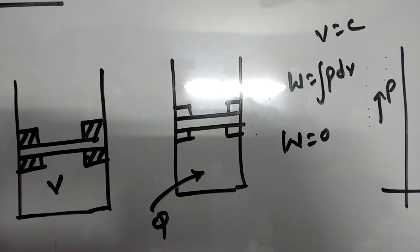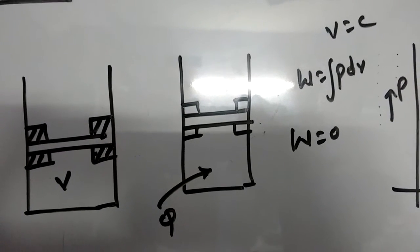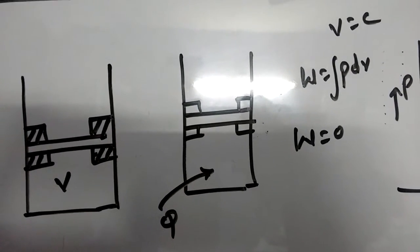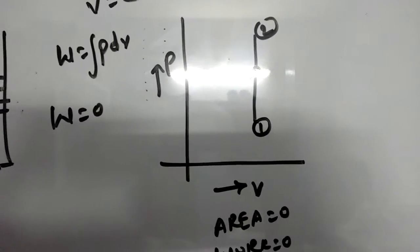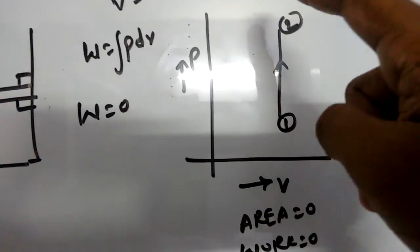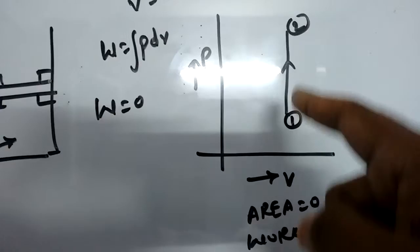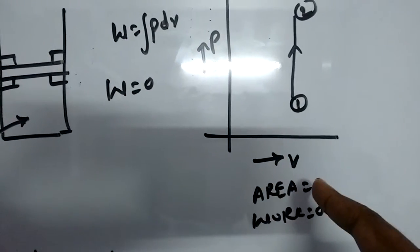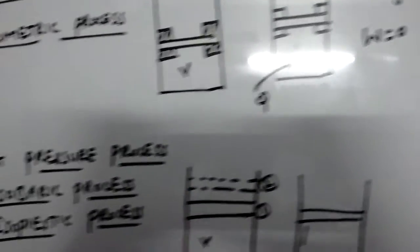From the graph of PV also you can conclude that the work done equals zero. Why? Because when you plot the process under PV, the curve is a straight line. So there is no area under the curve, means area equals zero, therefore work equals zero.